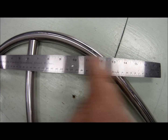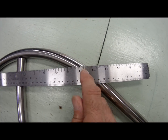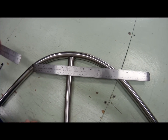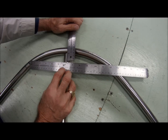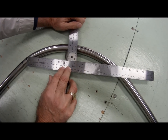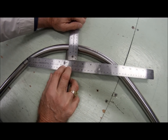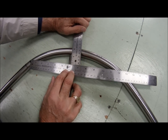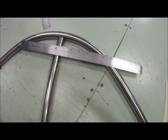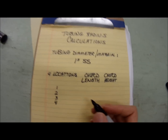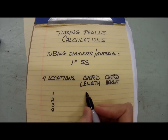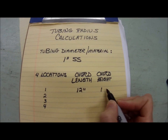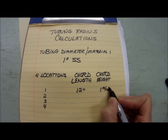The first reading is our cord length, which is the length across here, and it reads at 12 inches — go ahead and set it so it reads that. At half of that, or six inches, we're going to measure straight up from that point at six inches and read that mark. So we've got 12 inches cord length and I'm going to call the cord height 1 and 15/16 inches. Go ahead and write down those two measurements: for location one, cord length of 12 inches and 1 and 15/16 of an inch.